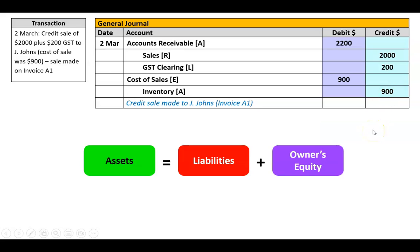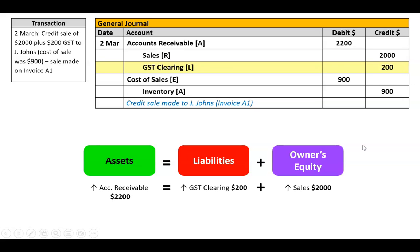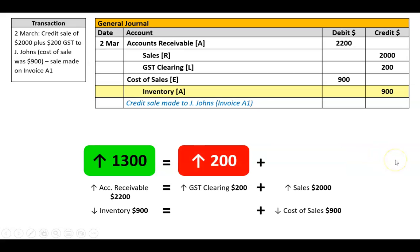From an accounting equation standpoint: accounts receivable is going up $2,200; sales which increase owner's equity because it's revenue is going up $2,000; GST clearing is increasing our liabilities by $200; the cost of sale expense will decrease owner's equity by $900; and lastly inventory, which is an asset, is going down $900. So balancing that up: assets go up $1,300, liabilities go up $200, and owner's equity goes up $1,100.